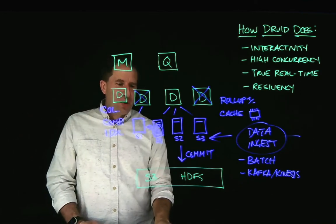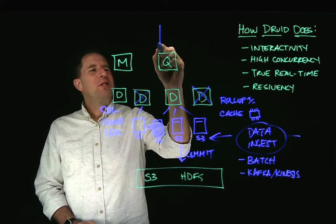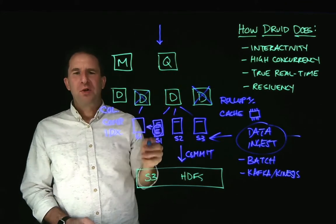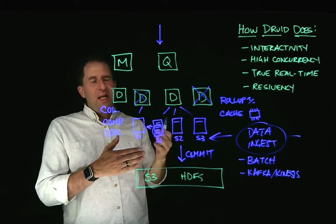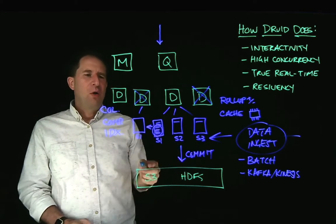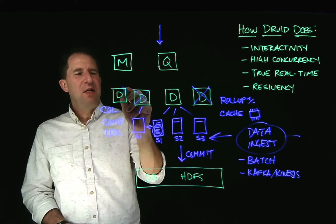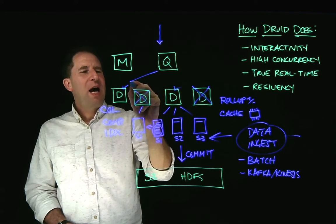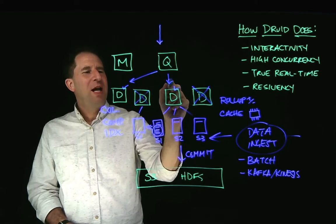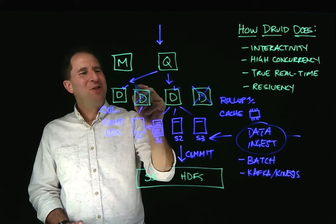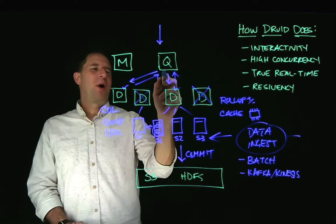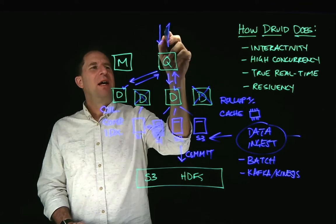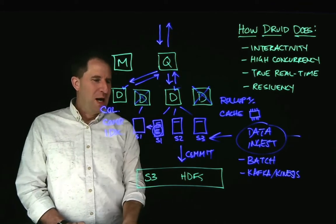Well, as you query data, queries come in from the application, the query server is going to prune that data, figure out what data nodes it needs to call. Let's say it figures out that the data you need is here and here, then it will scatter the query to the appropriate data nodes. The data nodes will respond to the query, send the data back. The query processor then aggregates the data and sends it back up to your application.